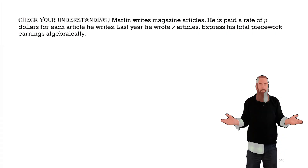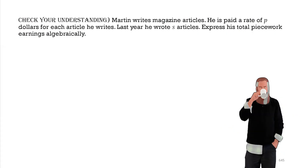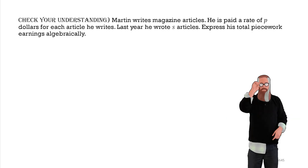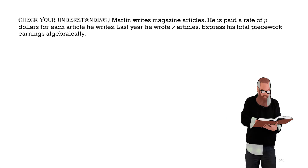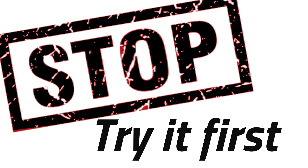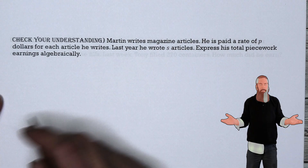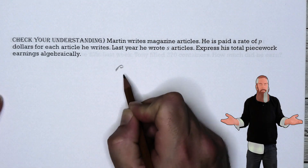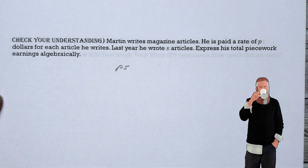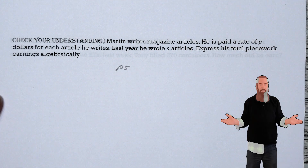Let's check our understanding. Martin writes magazine articles and is paid a rate of P dollars for each article he writes. Last year he wrote S articles. Express his total piecework earnings algebraically. Since he's paid P dollars per article and wrote S articles, his total earnings are P times S, or PS dollars.